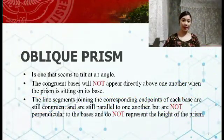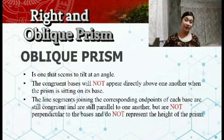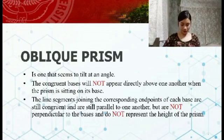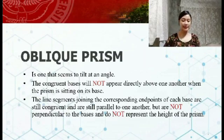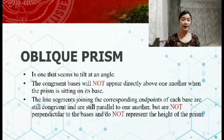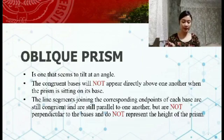Now let's move on to right and oblique prisms. An oblique prism is one that seems to tilt at an angle. In an oblique prism, the congruent bases will not appear directly above one another when the prism is sitting on its base. The line segments joining the corresponding endpoints are still congruent and parallel to one another, however they are not perpendicular to the bases and do not represent the height of the prism.